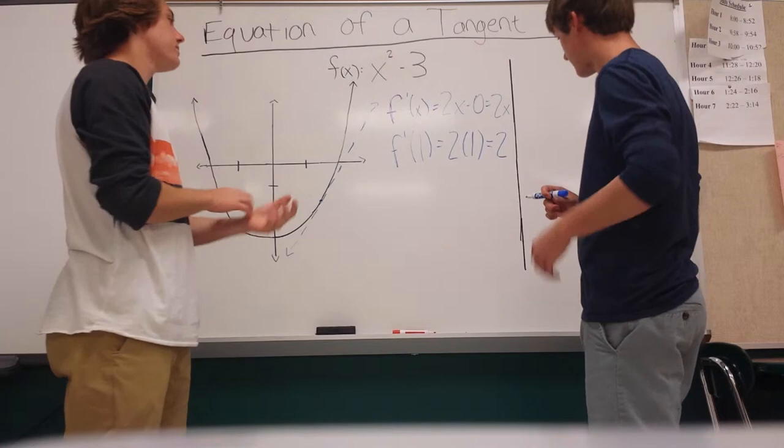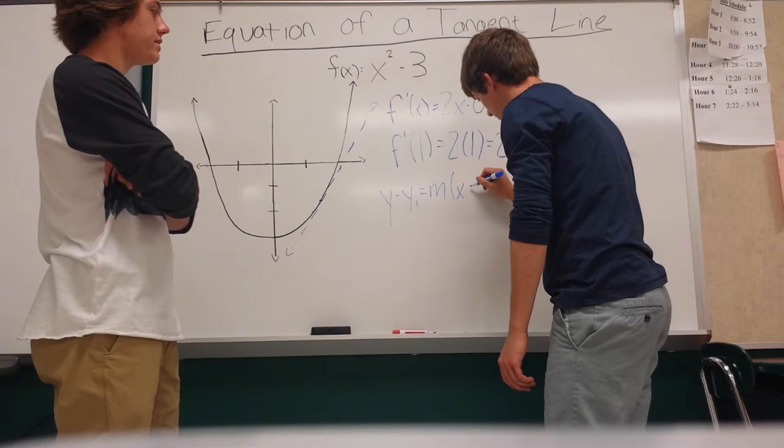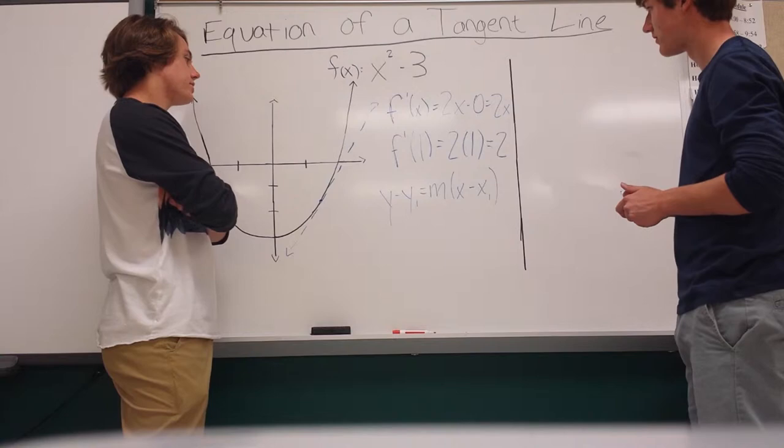So now the next part, using the point-slope formula, which is y minus y1 equals m times x minus x1. That is the way we are going to write the tangent line.